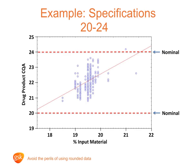The drug product CQA in this example is controlled by specification limits, expressed as 20 to 24, which means each reported result has to be greater than 20 or less than 24. The specification limits as stated have been plotted on the graph and can be called nominal specification limits. However, because the format of the specification limits uses whole numbers, any data point which rounds up to 20 or down to 24 is considered within specification. This is known as the rounding method, which is used in the pharmaceutical industry.